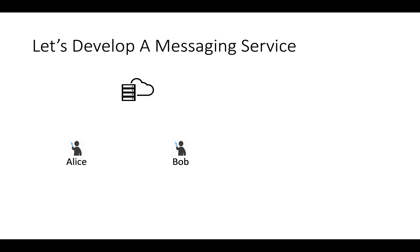Let's develop a messaging service. We need one server on cloud and subscribers, so we have Alice and Bob. Alice wants to send a message to Bob. She will establish a TLS connection with the cloud server, and the cloud server will establish another TLS connection with Bob. Both are using TLS connections, and that is why no one can see the conversation between Alice and Bob.